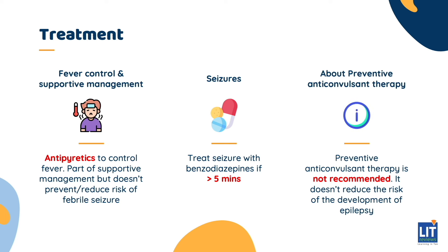Preventive anticonvulsant therapy is not recommended and does not reduce the risk of development of epilepsy. Of note, oral diazepam administered during the first few days of a febrile illness does reduce the recurrence of febrile seizures. In general, the consensus is that the benefits of anti-epileptic drug therapy in preventing recurring febrile seizures are outweighed by their numerous potential side effects. Parental reassurance and education is also important. Rectal diazepam can be given on standby, and parents should be taught first aid management of seizures and administration of rectal diazepam.